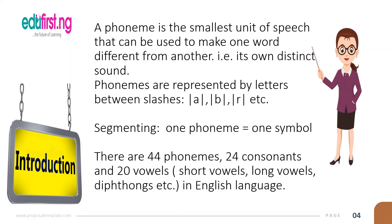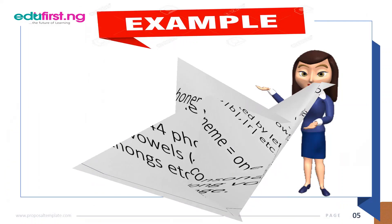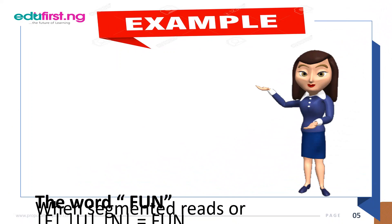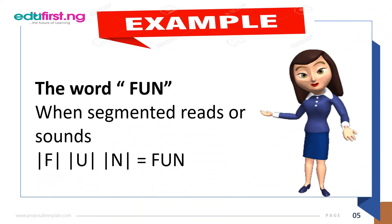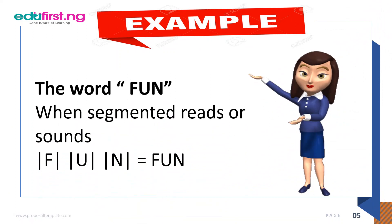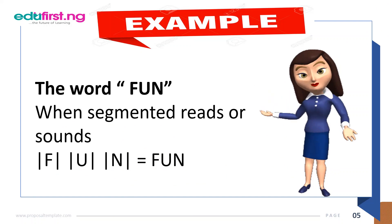There are 44 phonemes in the English language, which are 24 consonants and 20 vowels, which includes the short vowels, the long vowels, and the diphthongs. For example, we have the word phonemes. When segmented, it reads or sounds as individual phonemes.